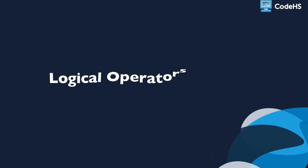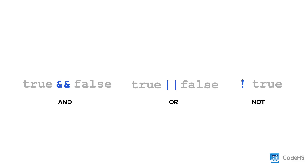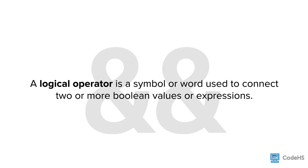In this lesson, we're going to learn about logical operators. Like other data types, Booleans also have operators. One subgroup of Boolean operators we will learn about are called logical operators. A logical operator is a symbol or word used to connect two or more Boolean values or expressions.